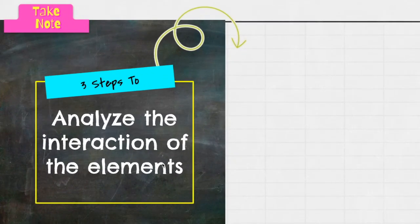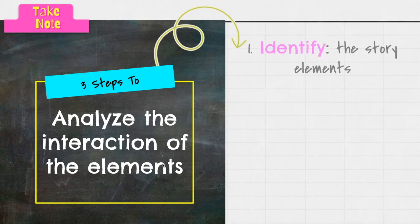So these elements do not just take place by themselves. Oftentimes they interact with each other, so we need to analyze. As a great language arts student, you need to start analyzing the interaction of these elements—how do they work together. There's three steps to do that. First, you have to identify the story elements. You have to know the basics: who are the characters, what is the setting, what is the plot. You have to know those basics first.